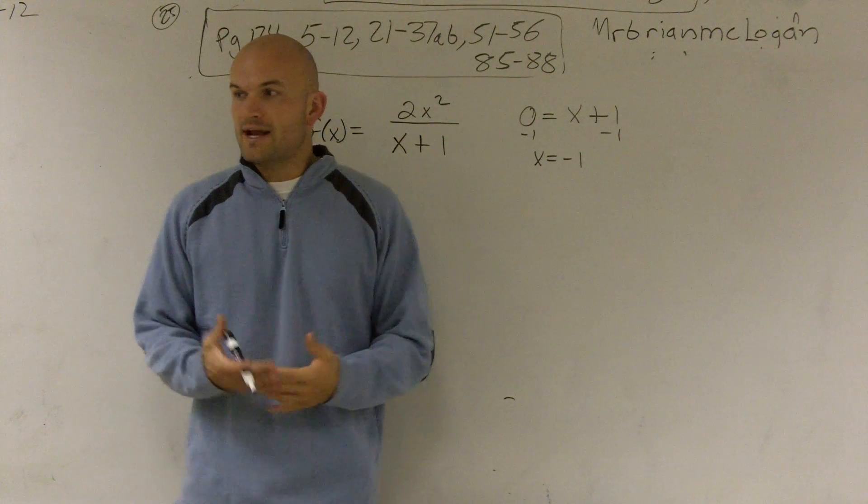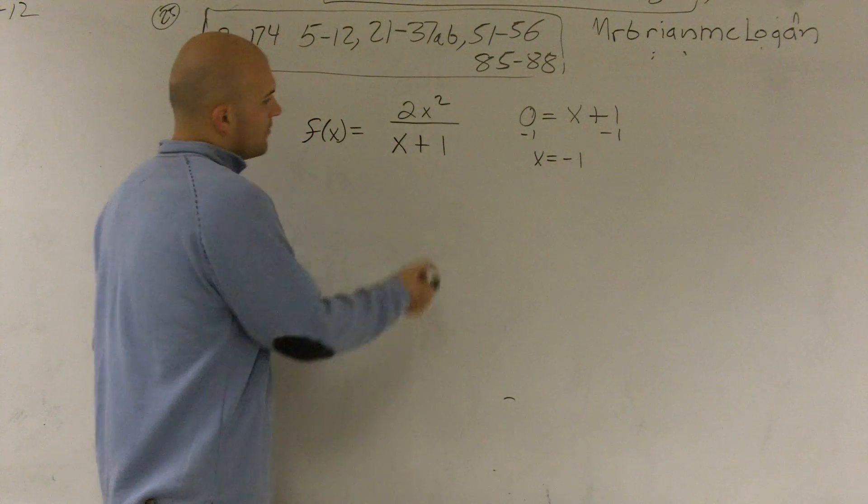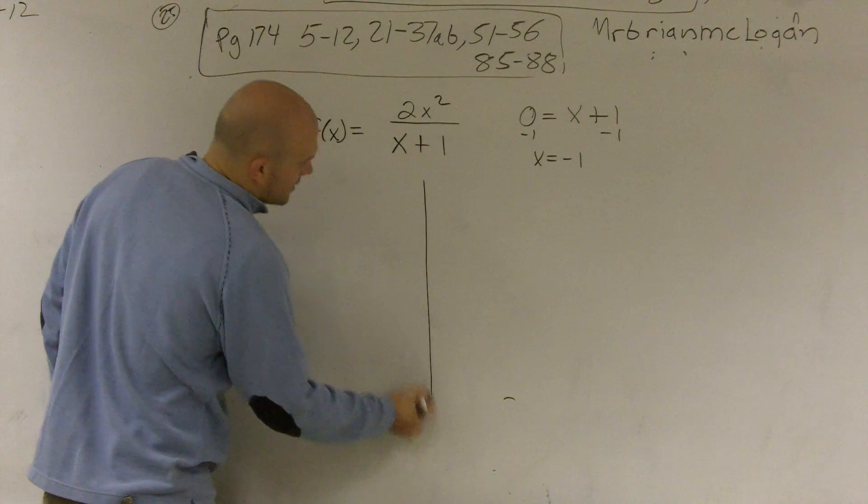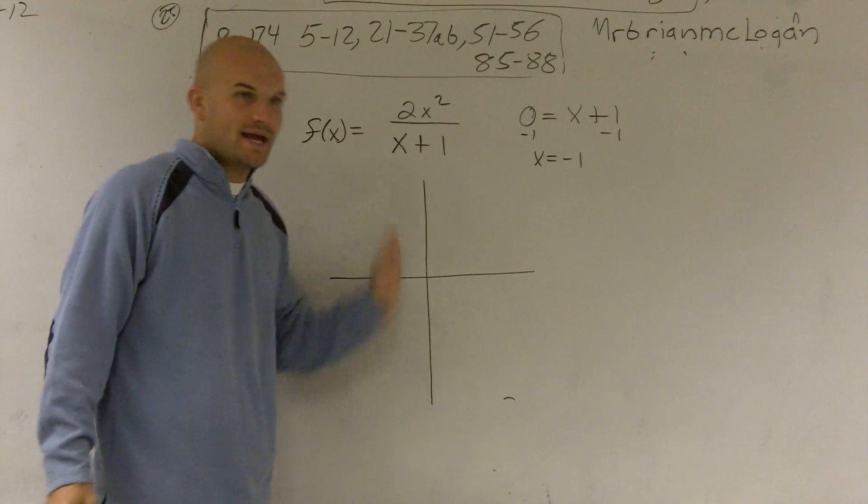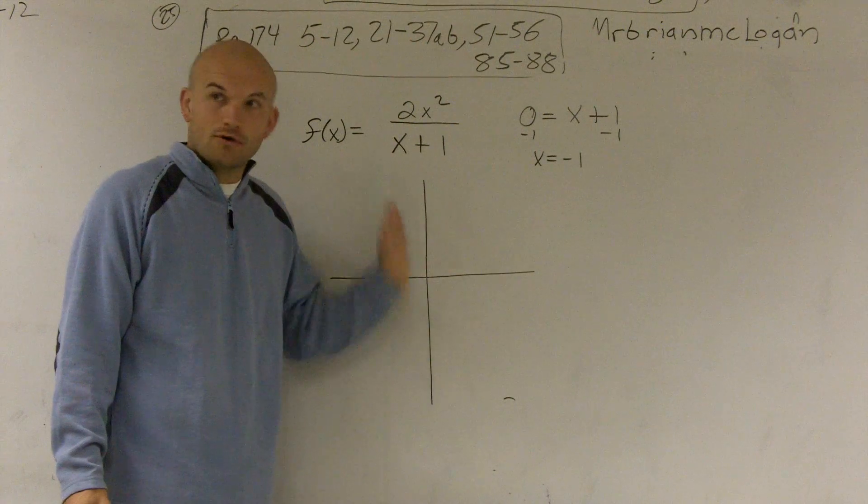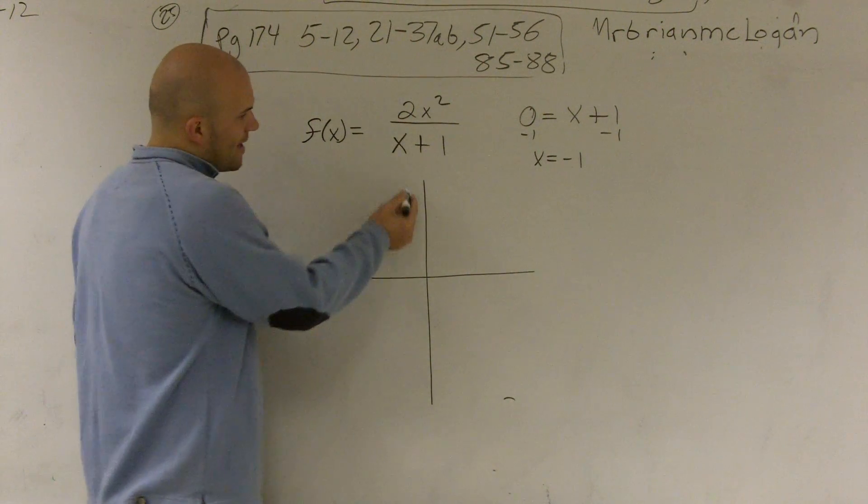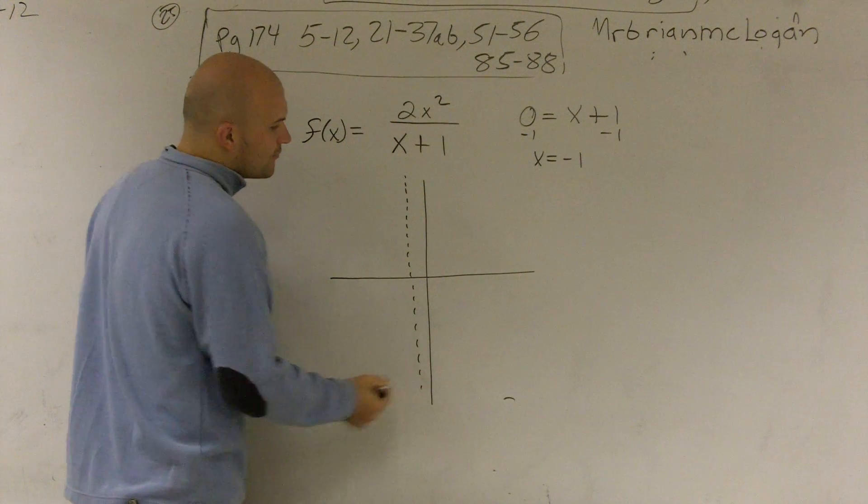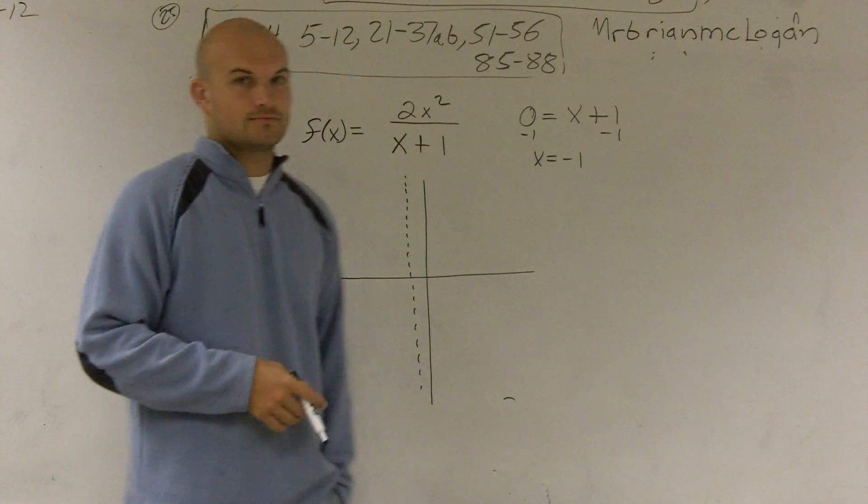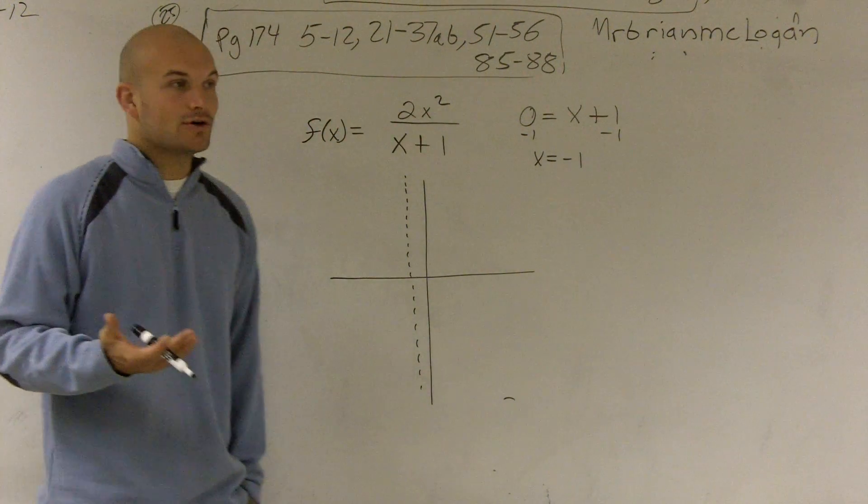So how do we represent that if we're going to be looking at a graph? Well, how you look at this is at negative 1, you can't have a value. There's no value at negative 1. So what we have is we have this little dotted line, which we call our vertical asymptote. So that means we're going to have a vertical asymptote here.